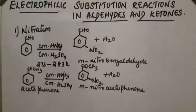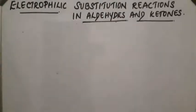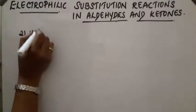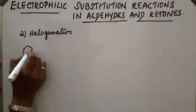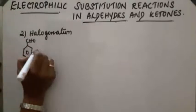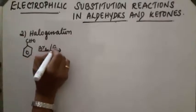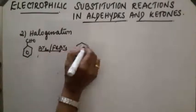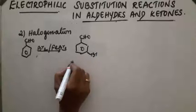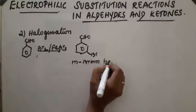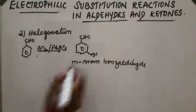Next reaction: halogenation reaction. Benzaldehyde on reaction with bromine and FeBr3 as a catalyst gives the product meta-bromobenzaldehyde, along with HBr.